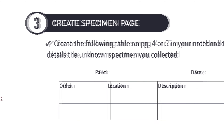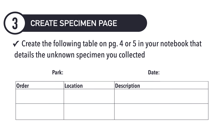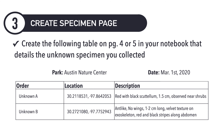In addition to iNaturalist, you will need to record your observation in your project notebook as: one, a data table, and two, an illustration. The table should be on page four or five. It should appear just like this, including the park name, collection date, order, location, and description. Here is an example of a completed data table. Ensure that you come back and write the actual name of the specimen once it has been officially identified.